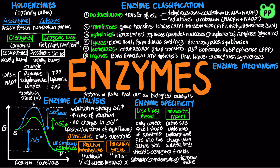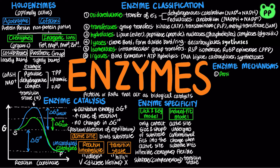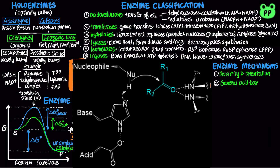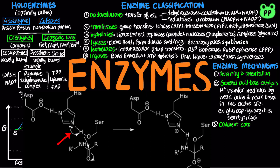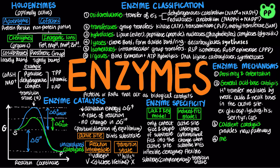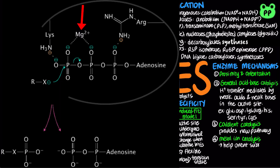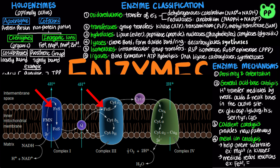Enzyme catalysis involves four main mechanisms. First, the enzyme active site is structured so that it brings substrate together in close proximity and correct orientation to cause the reaction. General acid-base catalysis refers to proton transfers mediated by weak acids and bases in the active site. Amino acids that typically participate include acidic amino acids glutamate and aspartate, basic amino acids lysine, arginine, and histidine, and polar amino acids cysteine, serine, and tyrosine. In covalent catalysis, a transient covalent bond is formed between the enzyme and the substrate, providing a new pathway that lowers the activation energy. Metal ions can also participate in catalysis — they can help orient substrate, such as magnesium ions in kinases, or mediate oxidation-reduction reactions, such as iron ions in the electron transport chain.